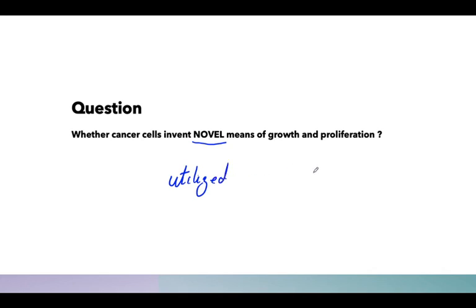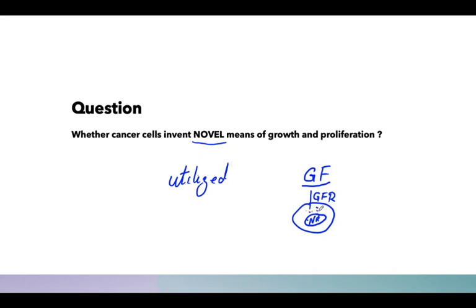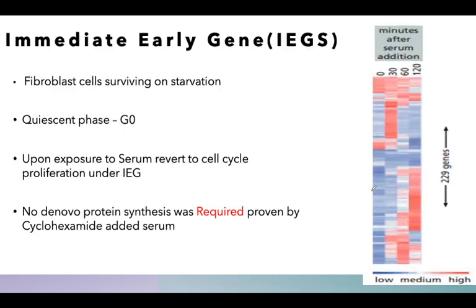In our previous discussion, we learned that there is a growth factor, and upon exposure of that growth factor to a cell via GFR — the growth factor receptor — there is a signaling cascade initiated inside the cell. This initiation is influenced by certain factors present inside the cell. Today we are going to study a portion of it, called cytoplasmic signaling — how these growth factors actually communicate downstream through the cytoplasm.